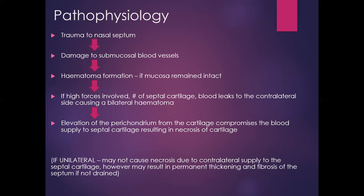As mentioned previously, elevation of the overlying perichondrium from the cartilage compromises the blood supply to the cartilage, resulting in ischaemia and necrosis. If the septal haematoma is unilateral, it may not cause necrosis due to contralateral blood supply, making it a little less worrying than a bilateral haematoma. However, it still needs to be drained urgently, as leaving it can result in permanent thickening and fibrosis of the septum, leading to nasal blockage further down the line.